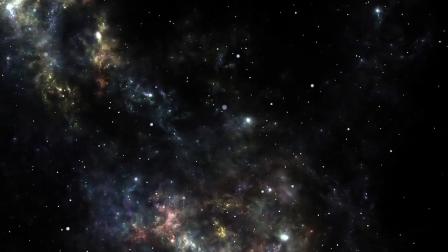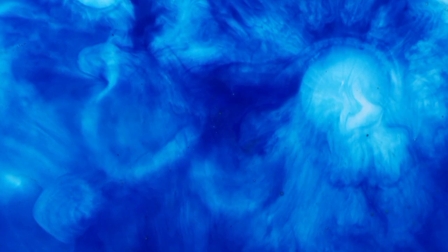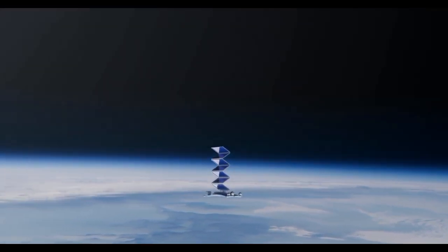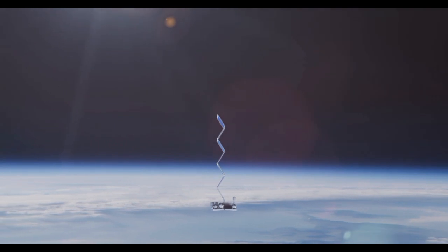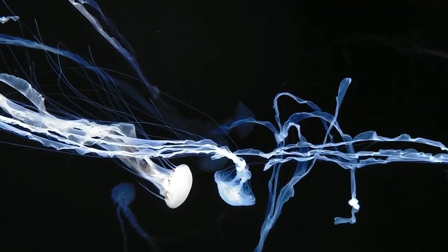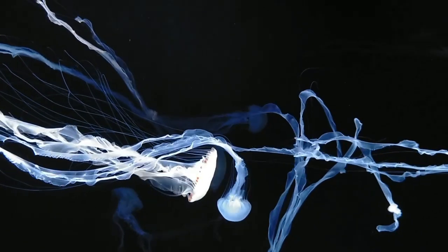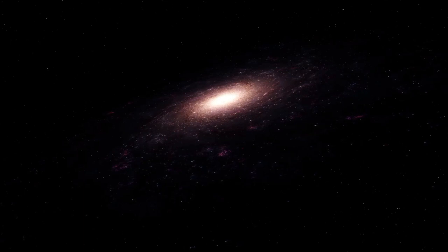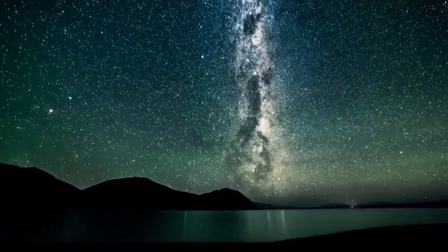The aftermath of Betelgeuse's explosion. When Betelgeuse finally goes supernova, it will release an enormous amount of energy, sending shockwaves and stellar material hurtling through space at incredible speeds. The explosion will generate a vast cloud of debris, forming what astronomers call a supernova remnant. This cloud of gas and dust will continue to expand for thousands of years, enriching the surrounding space with elements such as carbon, oxygen, and iron, the very building blocks of planets and life.